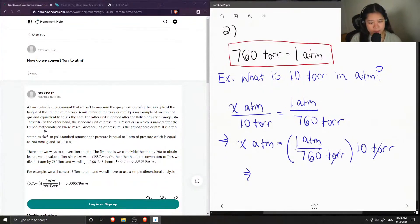And now I can solve for X. So if we do 10 divided by 760, you should end up with 0.0132 ATM.